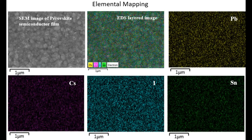Here you can see the distribution of different elements such as lead, cesium, iodide, tin in a perovskite film identified by the different color codes.